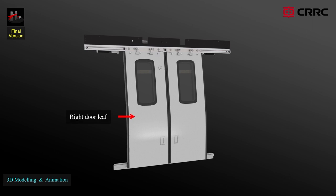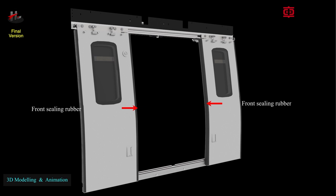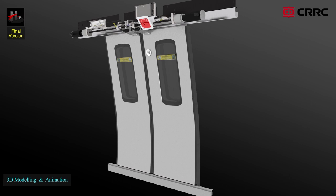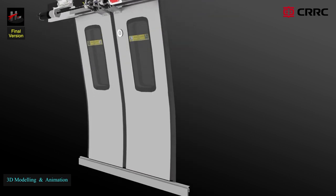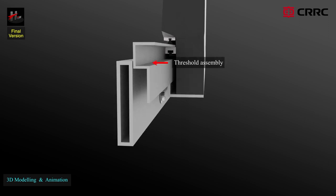There are 2 door leaves: the right door leaf and the left door leaf. There is also a fixed glass window. Side ceiling rubber is provided on both door leaves, which sticks with the car body at the door closed position and provides proper sealing to the car body. Two front ceiling rubbers on the door leaves, one male and one female, provide sealing function at the door closed position. The threshold assembly is mounted on the car body to guide and orient the movement of the lower portion of the door leaves, and also provides adequate sealing of the door with the car body.